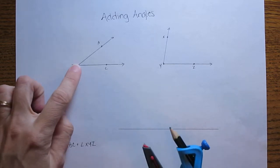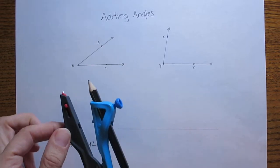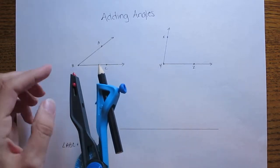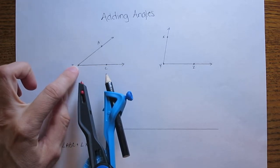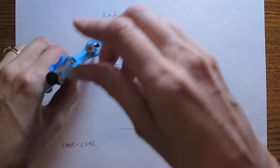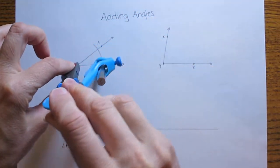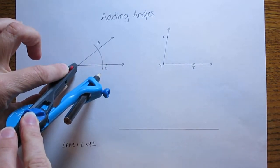So the first thing that I'm going to do is copy angle ABC onto this segment. To do that I'll take my compass and I'll put the pointed end at the vertex of the angle I'm going to copy. I'm going to make an arc with the compass.